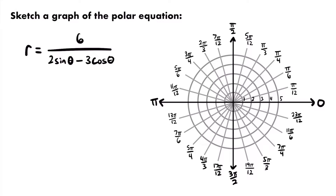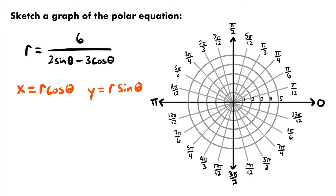The conversion formulas are: x equals r times cosine theta, and y equals r times sine theta. We want to rewrite the polar equation in terms of x and y, replacing r cosine theta with x and r sine theta with y. Currently I don't see r cosine theta or r sine theta directly — I just see sine theta and cosine theta — but we can manipulate the equation by multiplying both sides by the denominator.